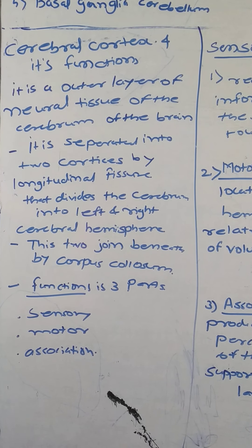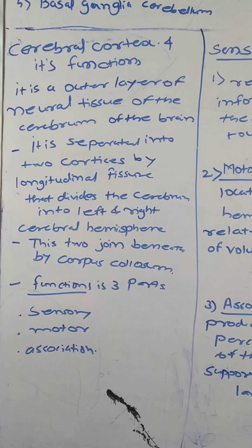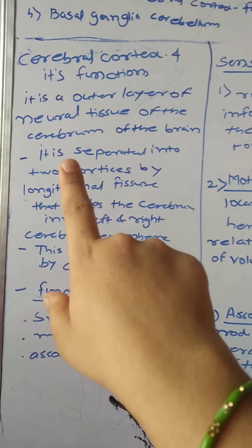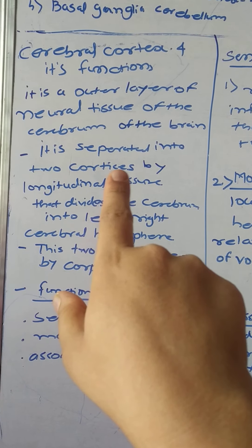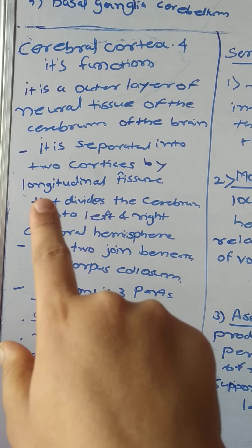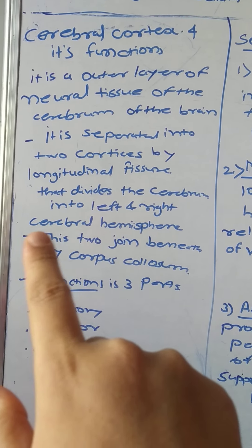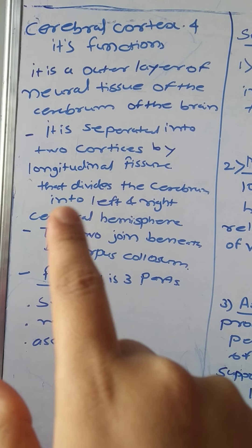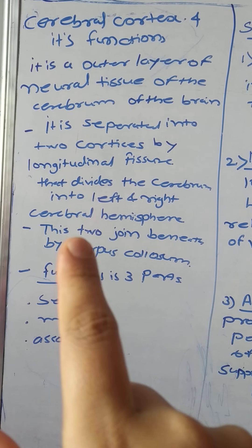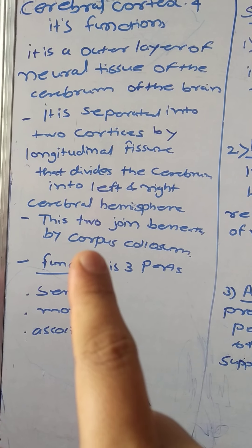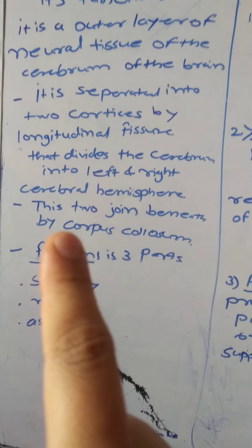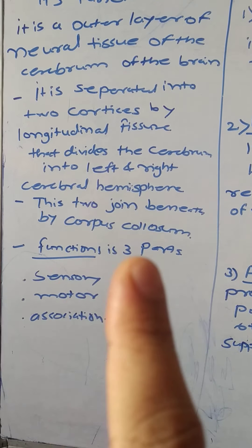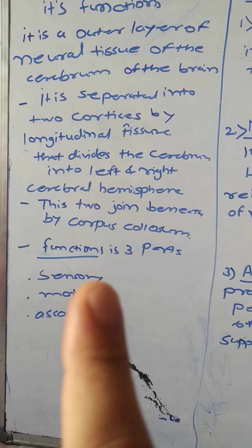Cerebral cortex is the outer layer of neural tissue of the cerebrum of the brain. It is separated into two cortices by a longitudinal fissure that divides the cerebrum into left and right cerebral hemispheres. Due to this longitudinal fissure, the cortex is divided into two — left and right. These two are joined beneath by the corpus callosum, which is one of the structures of the brain.